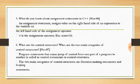What are the control structures? What are the main categories? Control statements cause a jump of control from one part of the program to another part of the program. The main categories of control structures are decision making statements and looping statements.